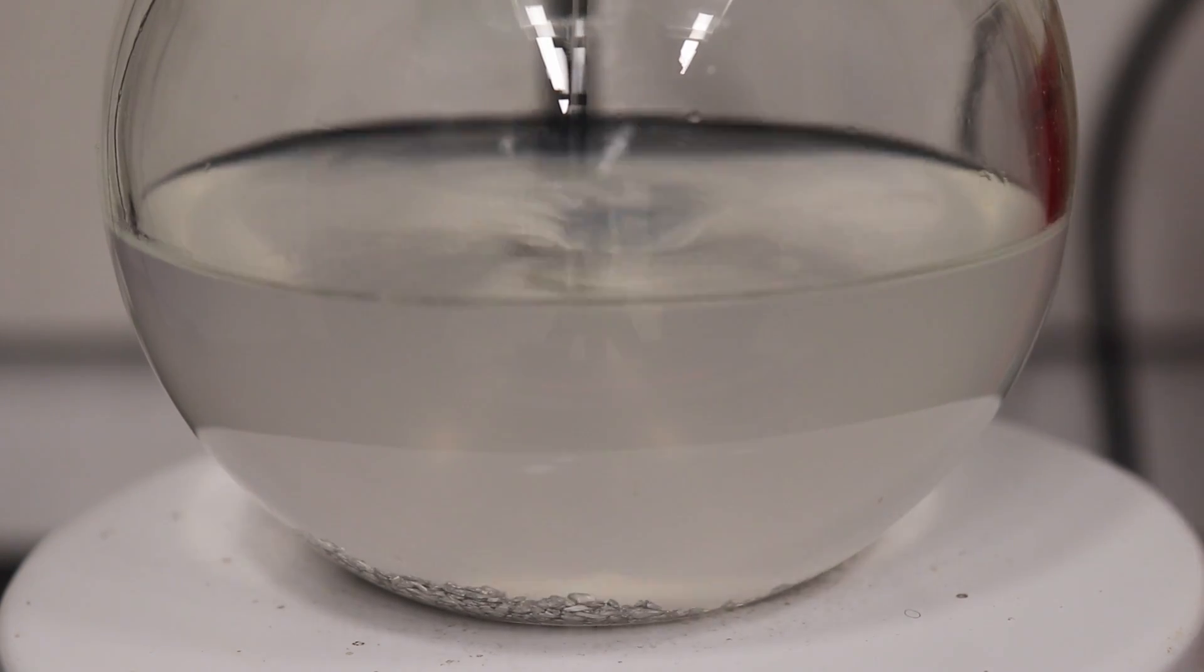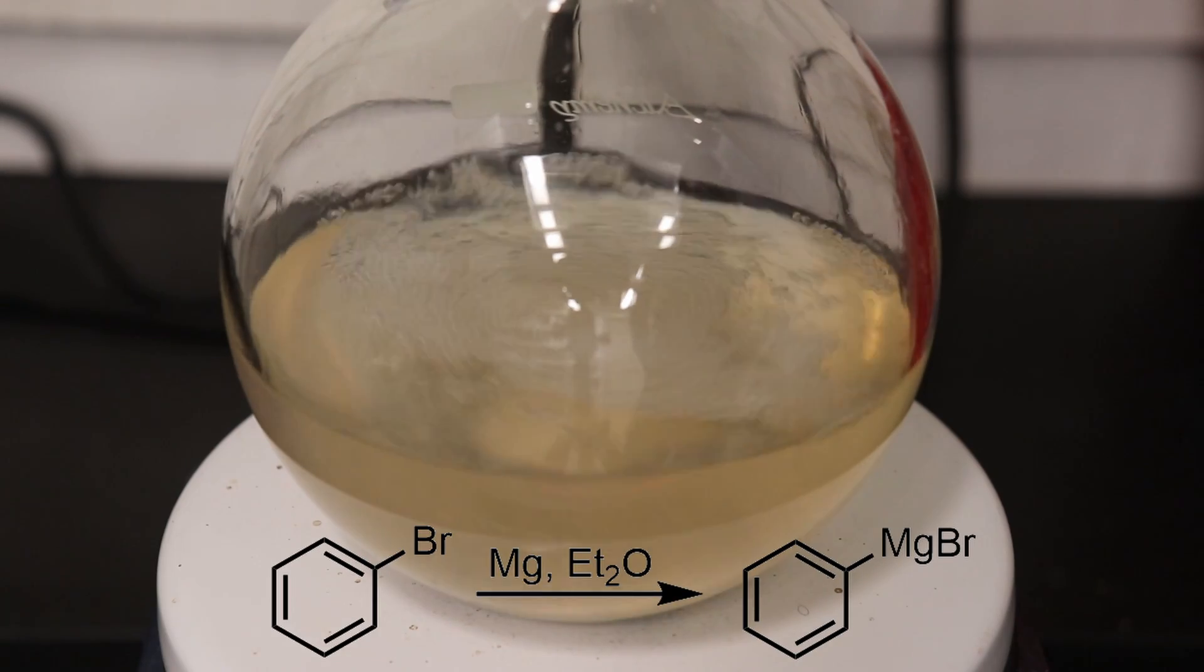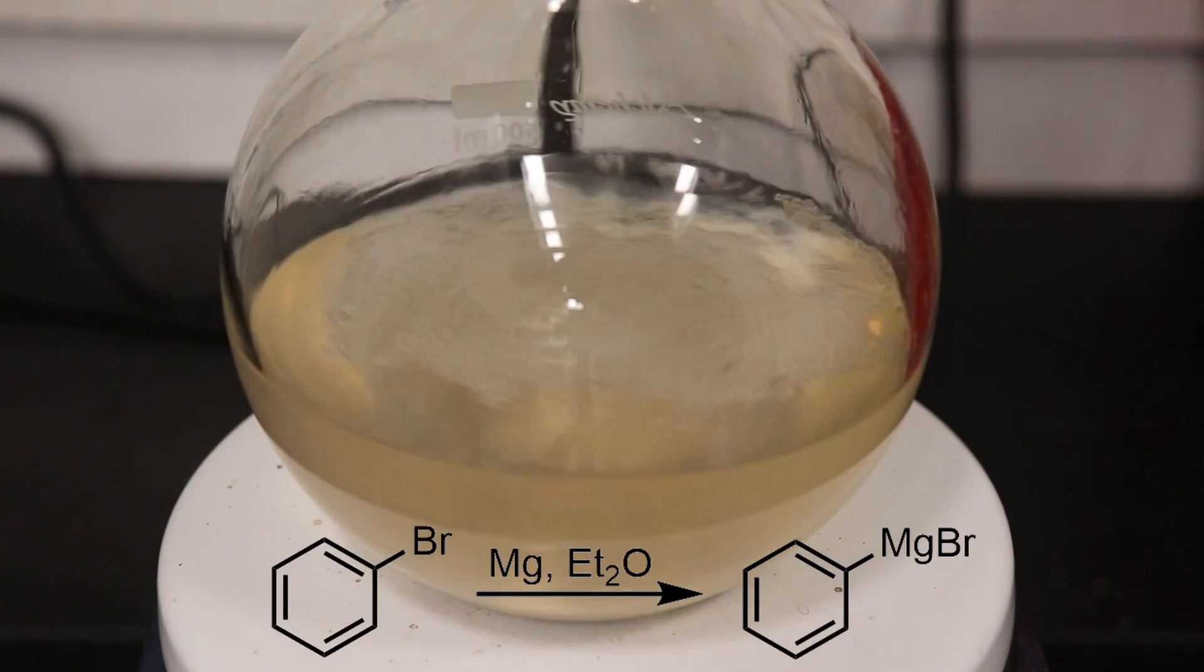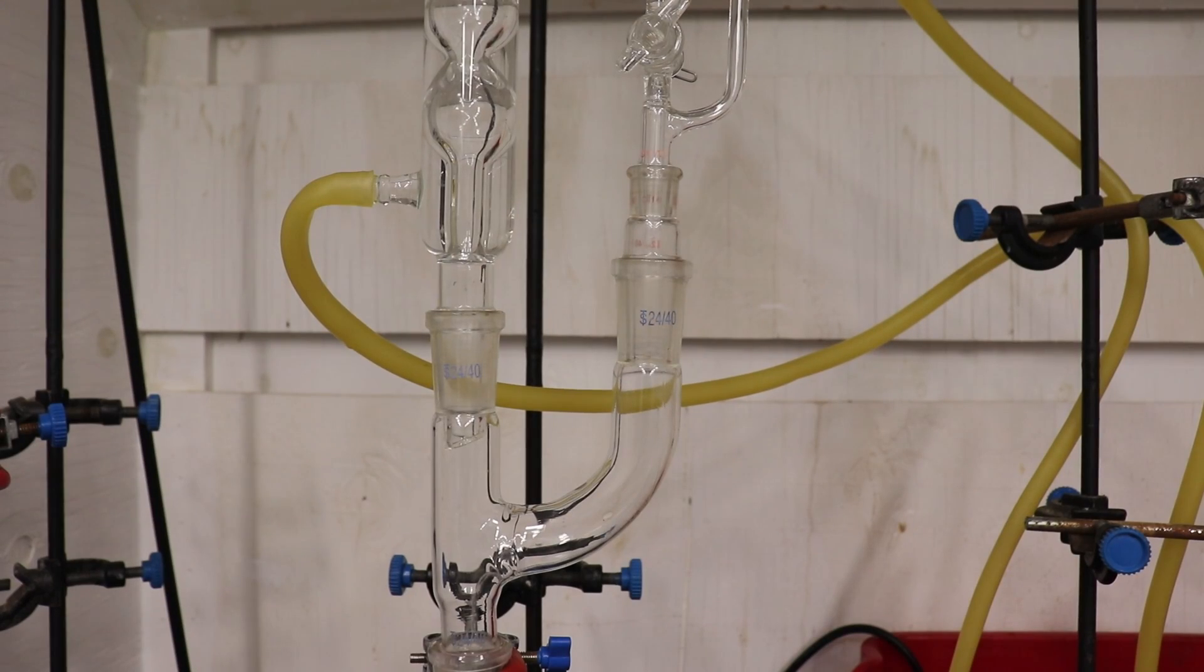Eventually the yellow coloration from the iodine faded and a cloudiness appeared which indicates the start of the reaction. Shortly after, a tan coloration appeared in the solution and it began to reflux spontaneously. After the initial exotherm had died down, the dropwise addition of bromobenzene was started at such a rate as to maintain the reaction at a good reflux.